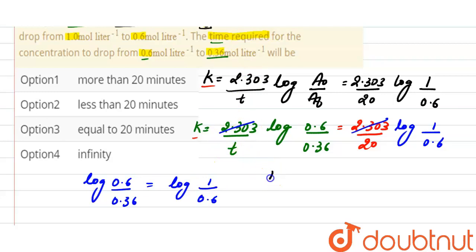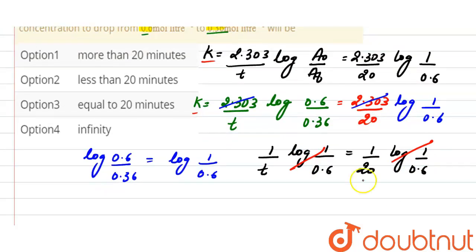So here this will be 1 divided by t, log of 1 divided by 0.6 equals 1 divided by 20, log of 1 divided by 0.6.